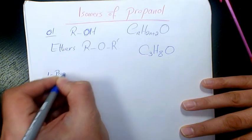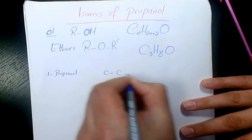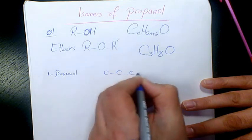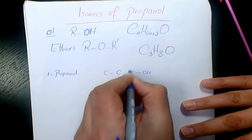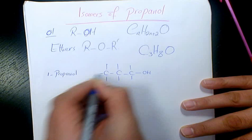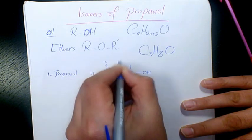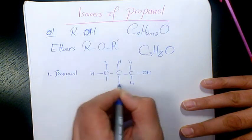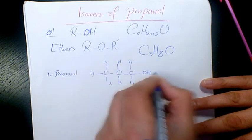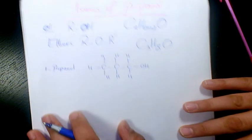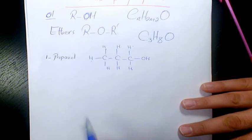The first one is going to be 1-propanol, which has 3 carbons with O-H connected to the first carbon, and 8 hydrogen atoms total. So that's called 1-propanol — that's a primary alcohol.